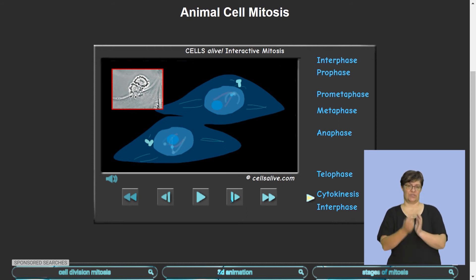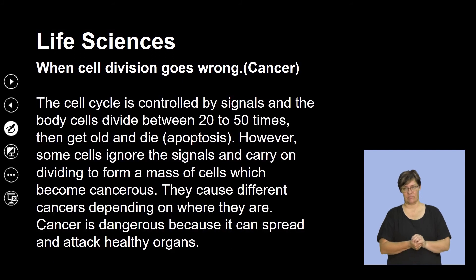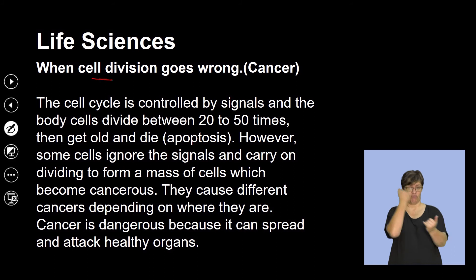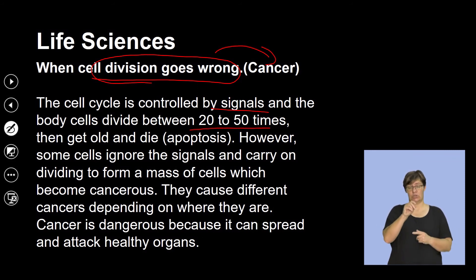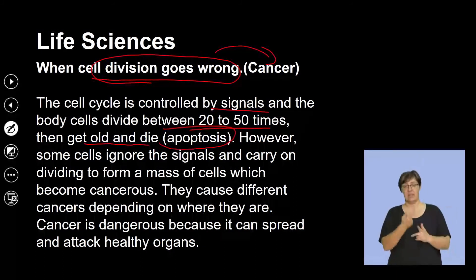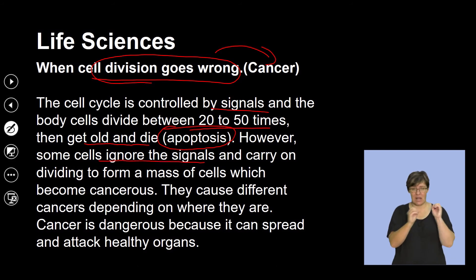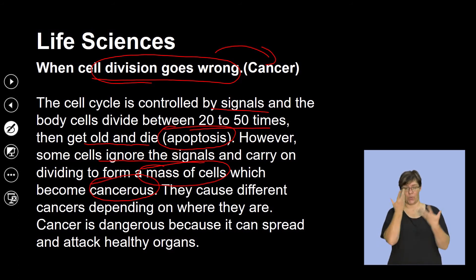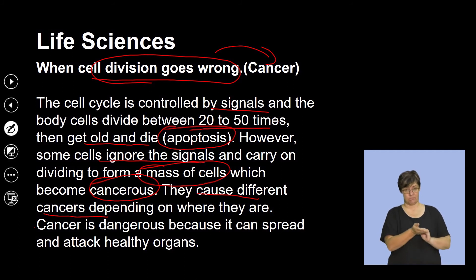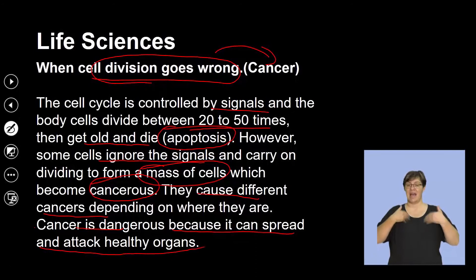Let's get to the application of what happens when cell division goes wrong. Uncontrolled cell division often leads to cancer developing. The cell cycle is controlled by signals, and body cells divide between 20 to 50 times then get old and die — that process of cell death is called apoptosis. However, some cells ignore the signals and carry on dividing to form a mass of cells, resulting in uncontrolled cell division that forms tumors and can become cancerous.